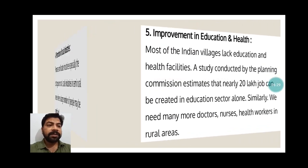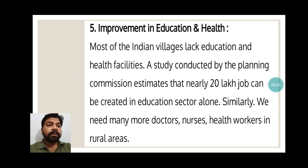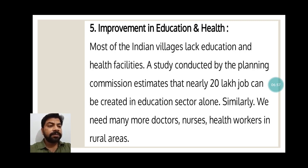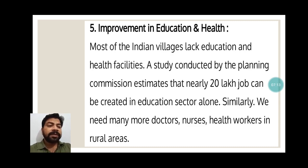Once a factory, mill, or small workshop is opened, it will provide jobs to others and open up employment. The fifth point is improvement in education and health. Most Indian villages lack education and health facilities. A study by the Planning Commission estimates that nearly 20 lakh jobs can be created in the education sector alone. Similarly, we need many more doctors, nurses, and health workers in rural areas. A Primary Health Centre in any rural area or block provides jobs to 10 to 20 people locally.